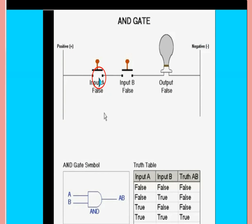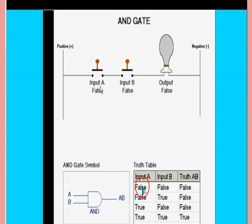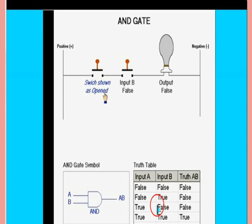This is zero, this is zero and the bulb is not on, meaning zero. The AND gate symbol: A and B inputs, A·B output. Zero, zero means false, false. False, true means zero. One, zero, one, one. False, false, false, true.